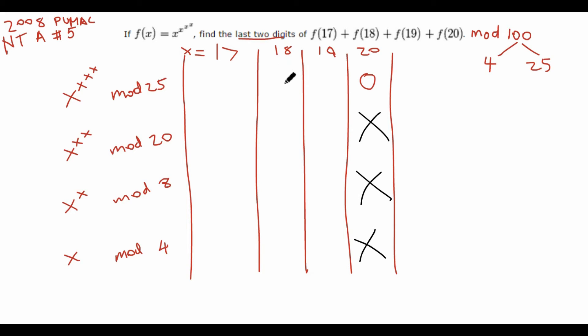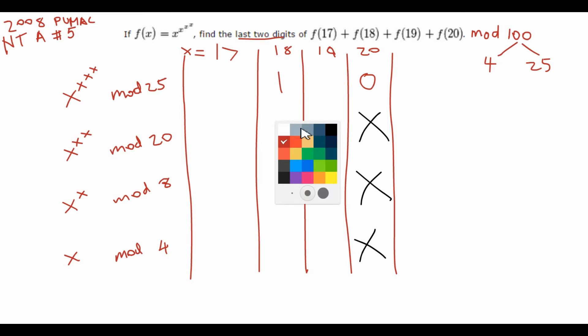Similarly, for x = 18: since 18 and 25 are not relatively prime, Euler's theorem is irrelevant. But 18 squared is 324, which is -1 mod 25. So 18 to the 4th is 1 mod 25. Since 18 to the 18 to the 18 is divisible by 4, we get 18 to the 18 to the 18 to the 18 is 1 mod 25, and the remaining boxes cancel out.